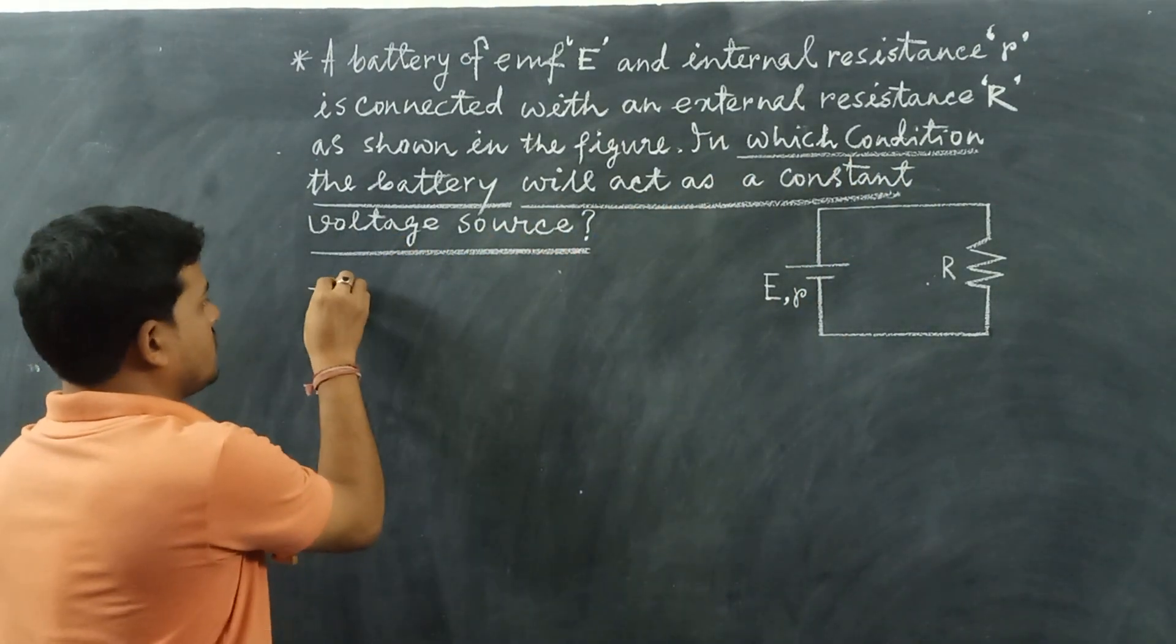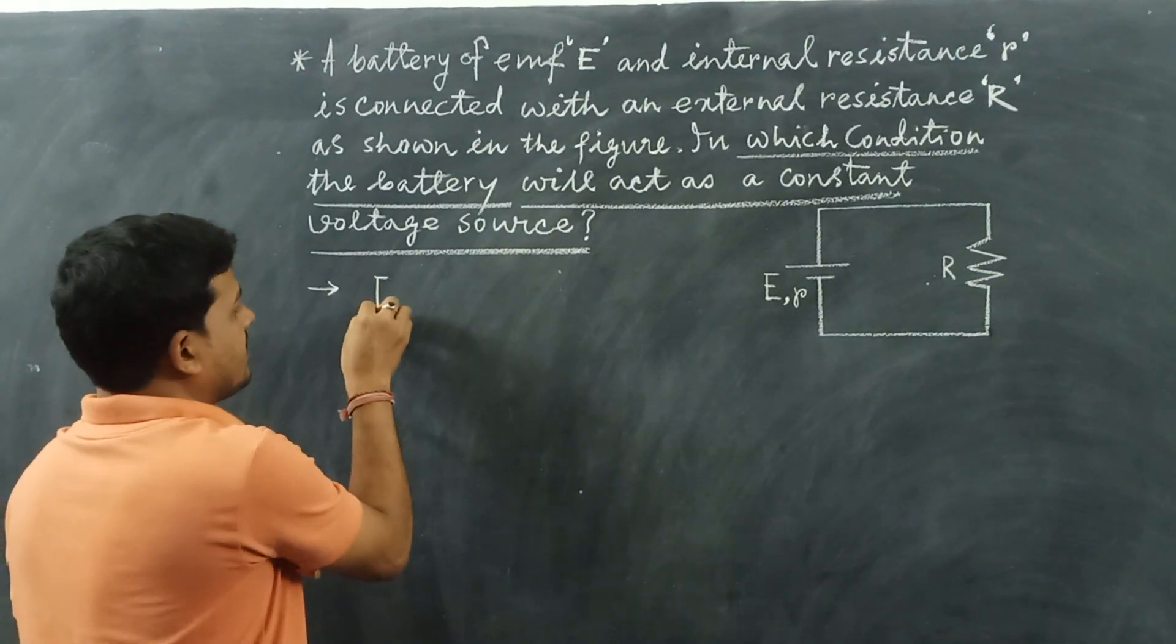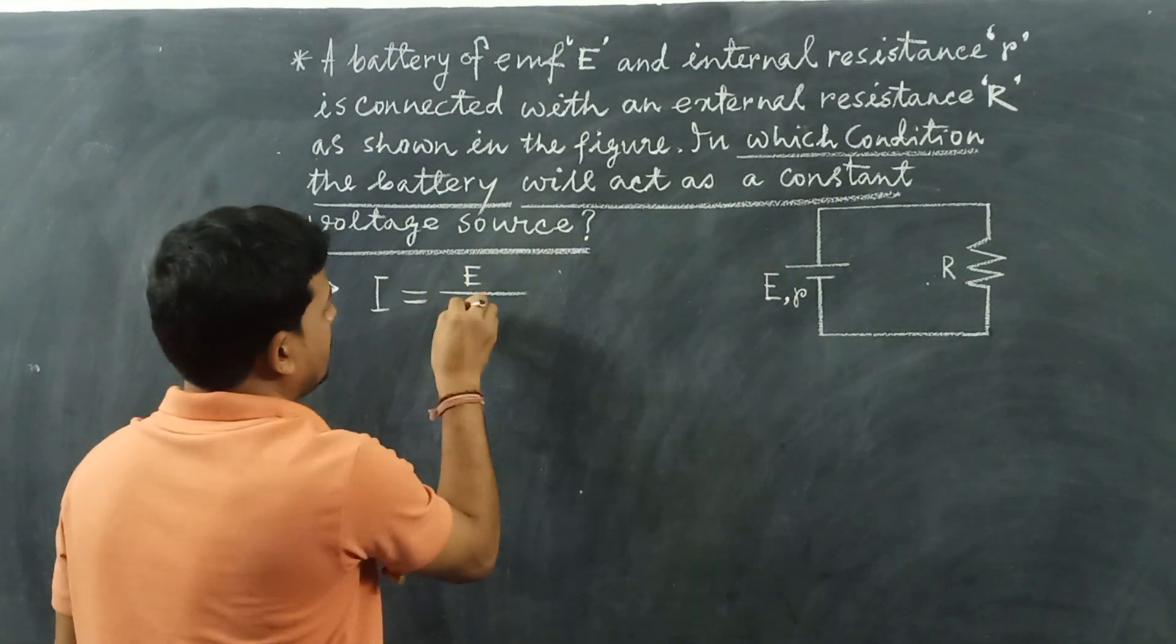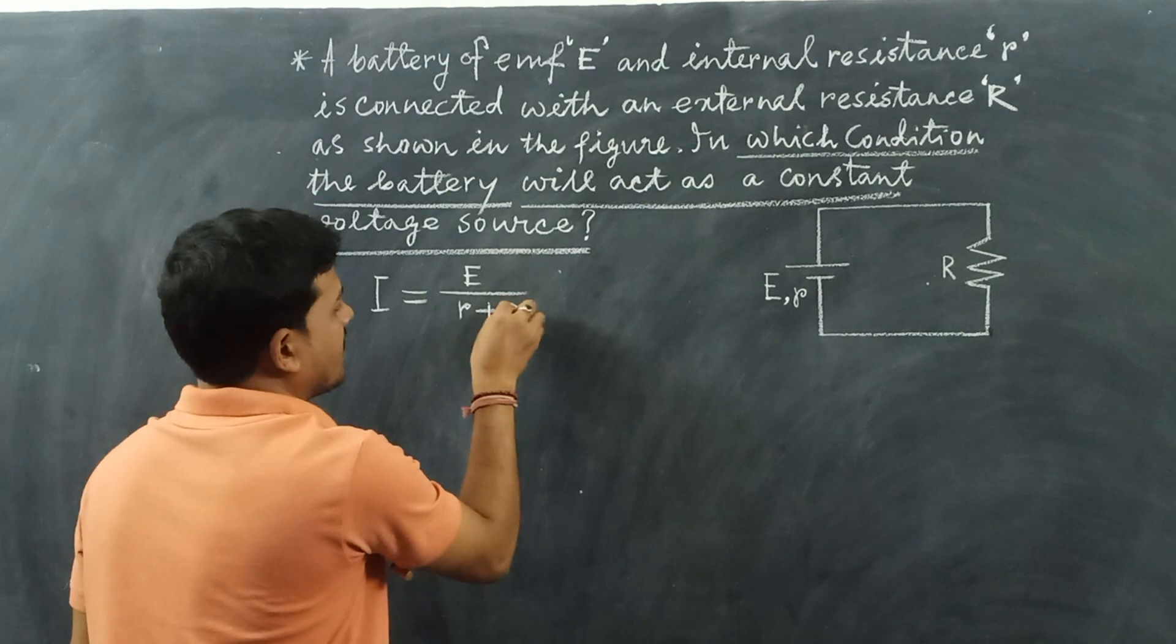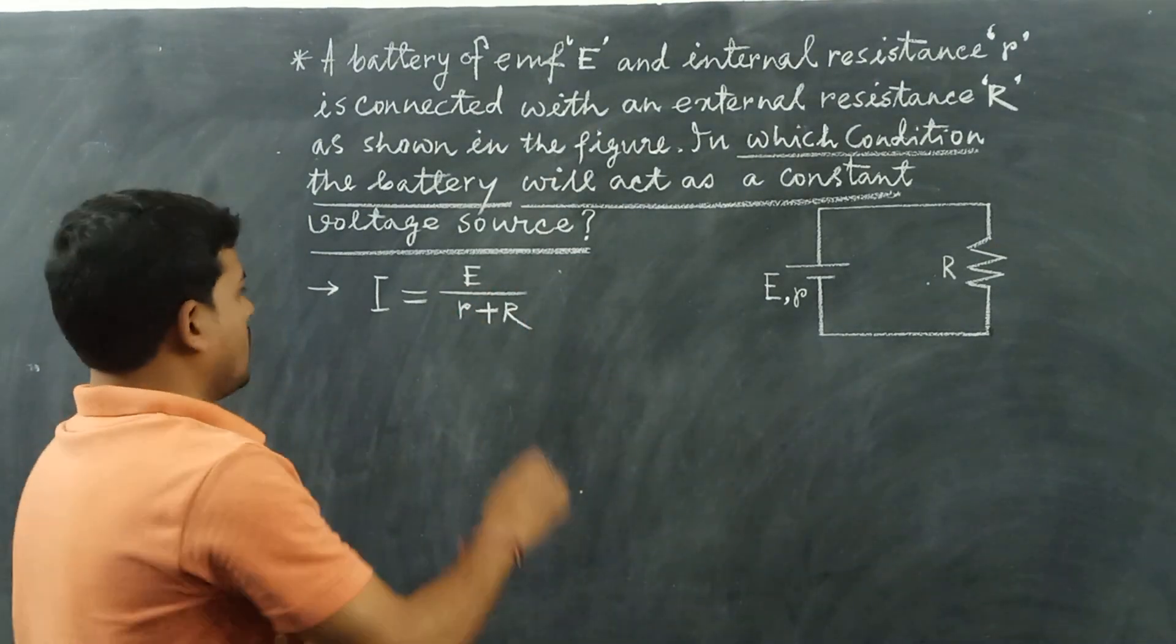Let us see. To solve this problem, we know that the electric current I flowing through the circuit is equal to E divided by r plus R, where r plus R is the total resistance of the circuit.